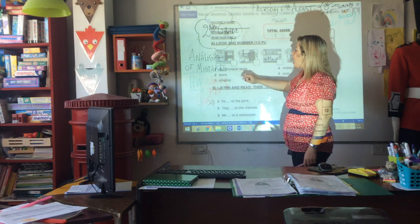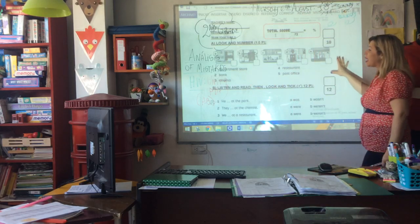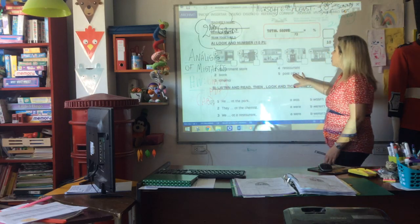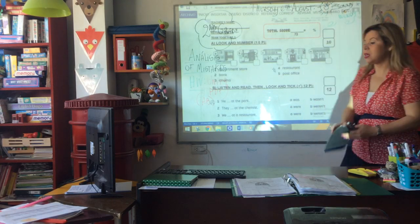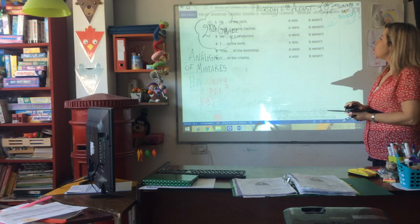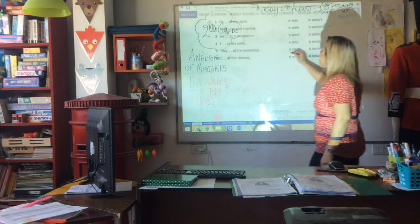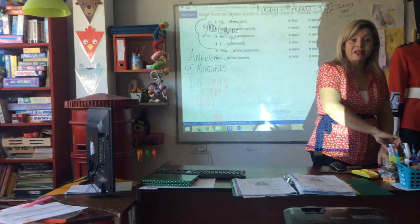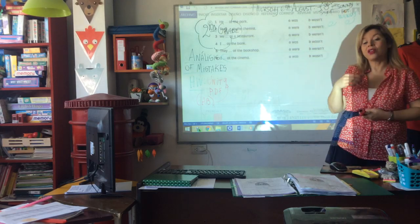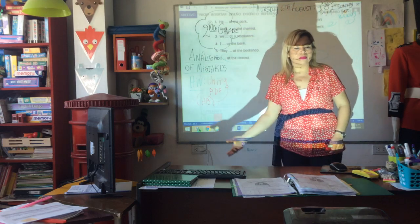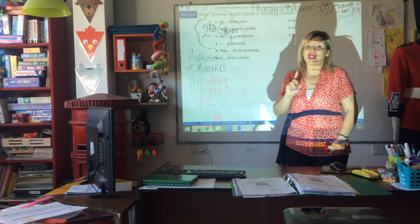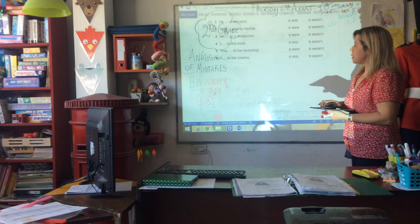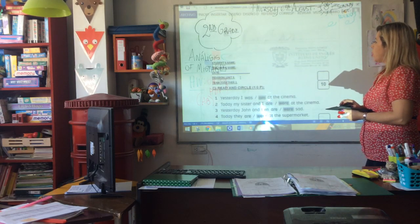Look at number one: department store, bank, cinema, restaurant, post office. El que falló en este ejercicio es porque no estudió los nombres de cada cosa: dónde es banco, dónde es una oficina de correo. Then listening.